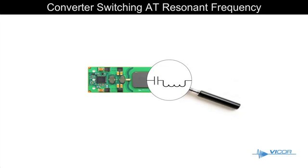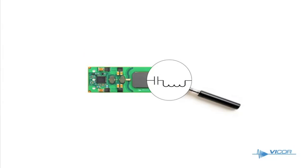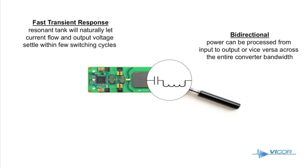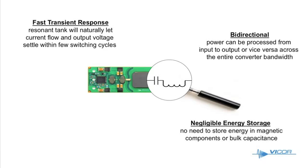The sine amplitude converter always operates at the resonant frequency and offers additional benefits to your design. Complete transient response within a few switching cycles. Power can be processed in either direction seamlessly and the converter stores negligible power compared to its throughput.